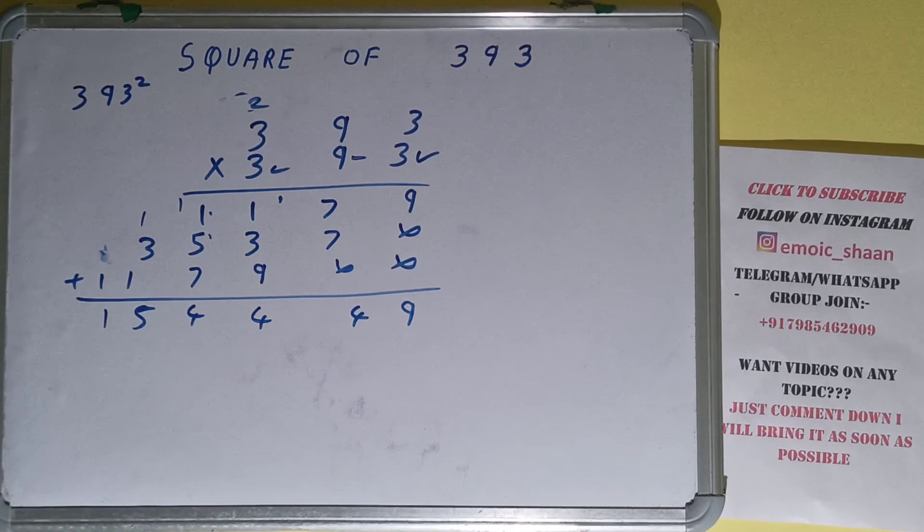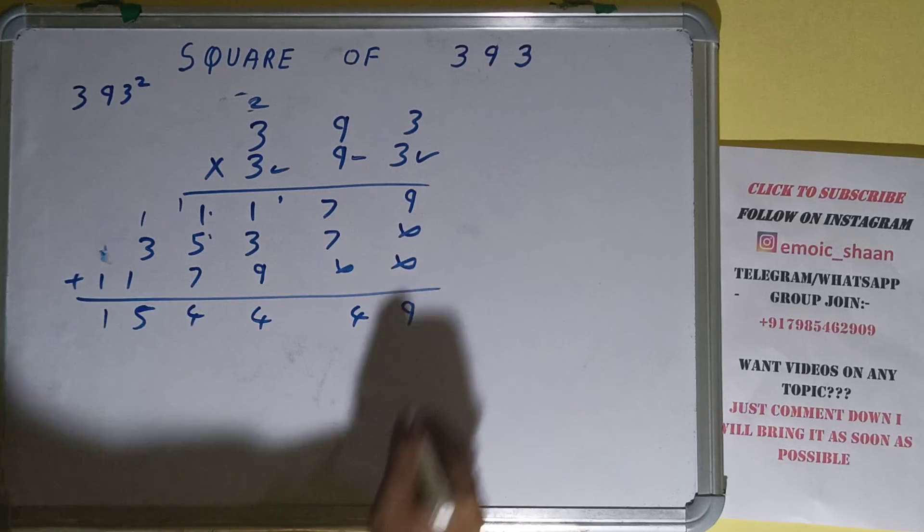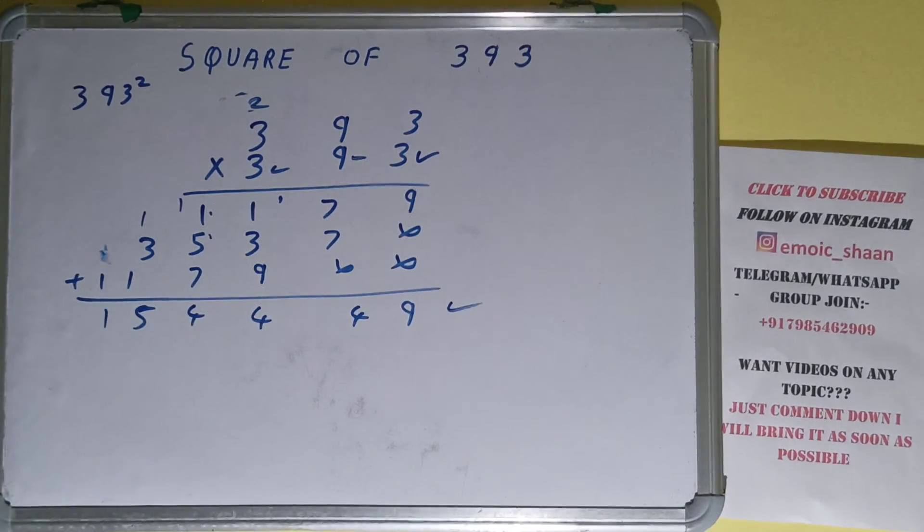So your answer will be 154449. That will be the square of the number 393. This is all. If you found the video helpful, please hit the like button, do consider subscribing, and thanks for watching.